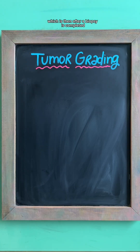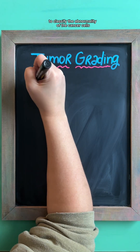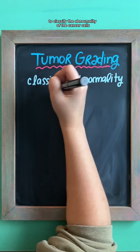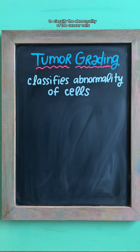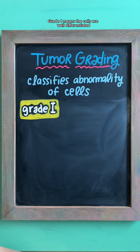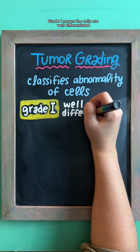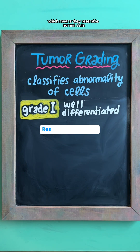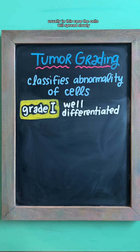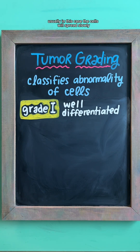Then there's tumor grading, which is done after a biopsy is completed to classify the abnormality of the cancer cells. Grade 1 means the cells are well differentiated, which means they resemble normal cells. Usually in this case, the cells will spread slowly.